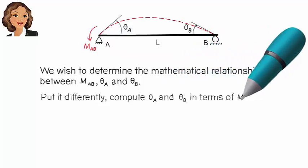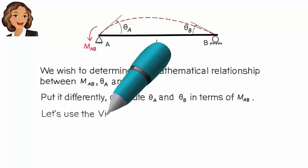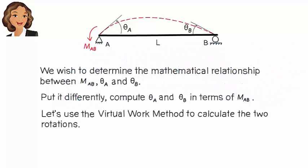Put it differently, we want to compute theta A and theta B in terms of M_AB. Let's use the virtual work method for calculating these joint rotations.